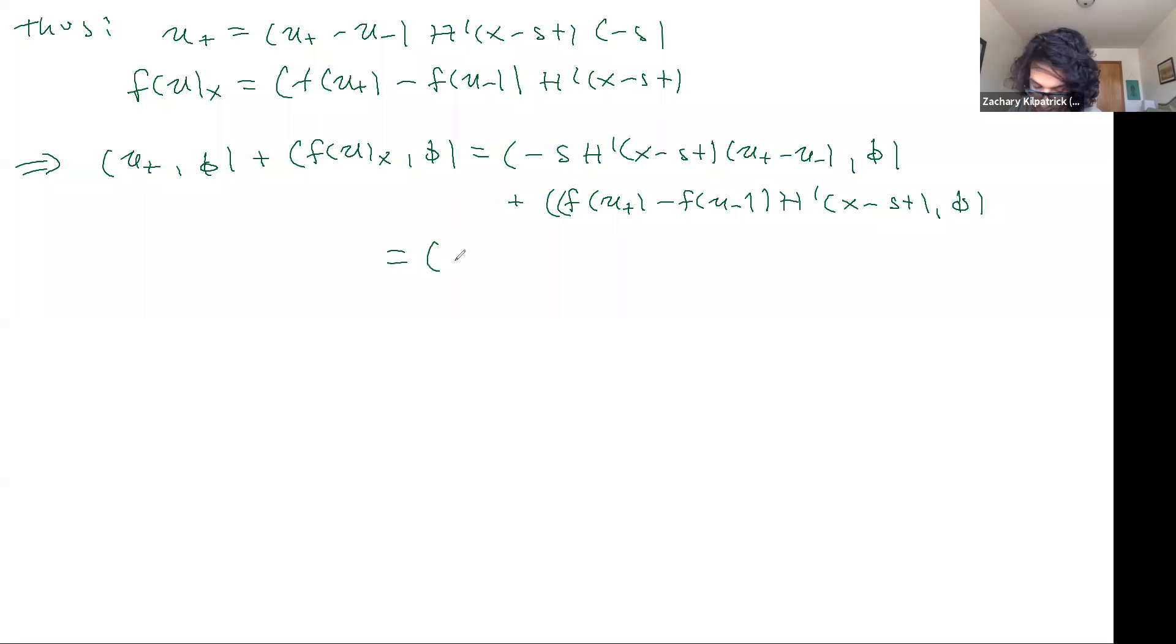So we end up with minus S U plus minus U minus plus F of U plus minus F of U minus phi of ST. And we say that this equals zero. And so what did we use here? We use that H prime is equal to delta,